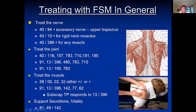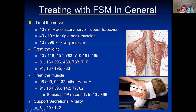In general when treating with FSM, we treat the nerve first because we can — the nerve is the easiest thing to treat. For the first 10 years, I treated the spinal cord: 40 on A, 10 on B for inflammation in the spinal cord. That softens the neck muscles. Then I reduce inflammation in the nerve: 40 and 396. That's pretty much for any muscle that gets its nerve from the spinal cord.